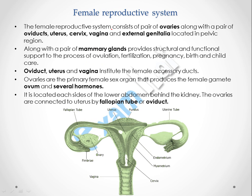The Female Reproductive System consists of a pair of ovaries and a pair of oviducts. It also consists of the uterus, cervix, vagina, and external genitalia, and all these are located in the pelvic region.